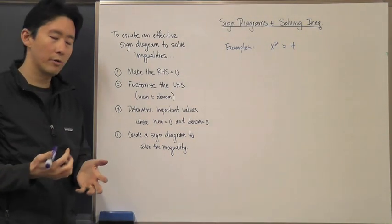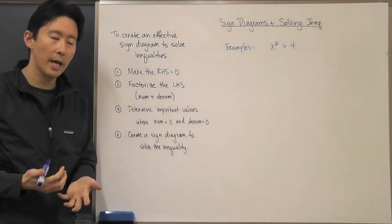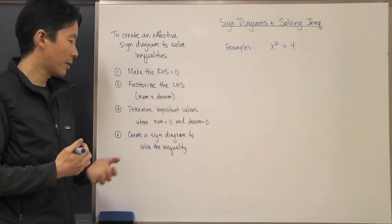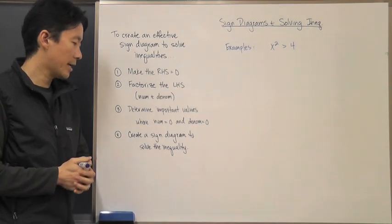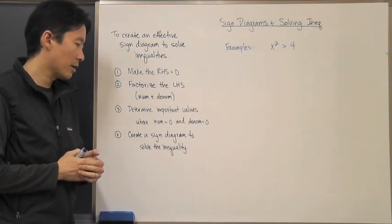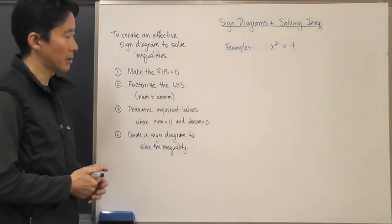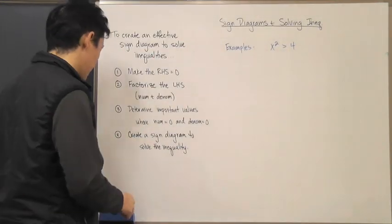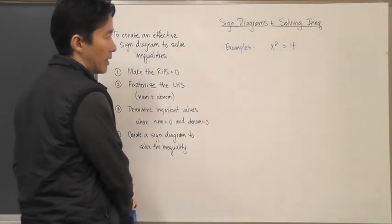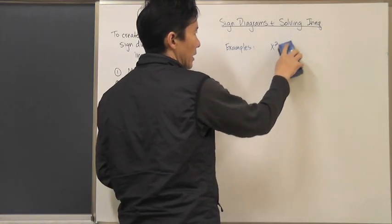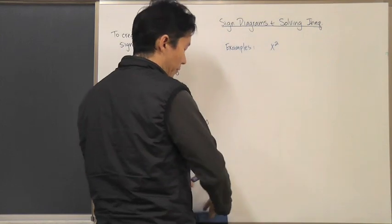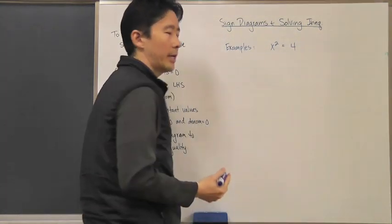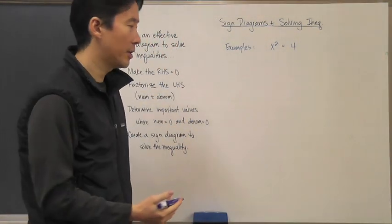Then we need to determine what the important values are — in other words, where the numerator and the denominator are equal to zero. Then we're going to create a sign diagram to solve the inequality. So let's go ahead and take a look at this situation.